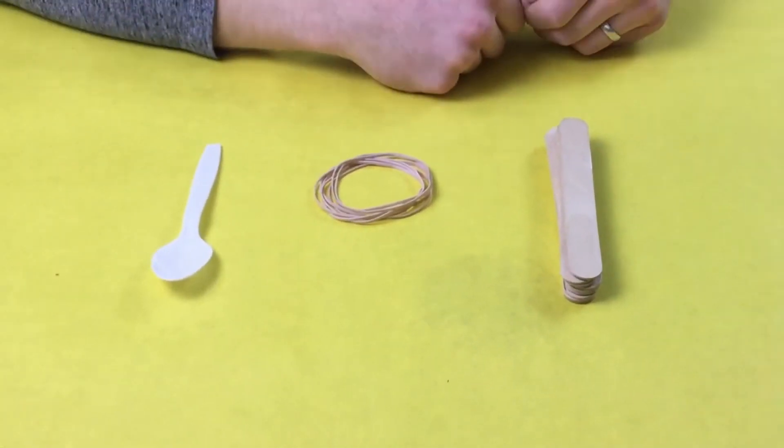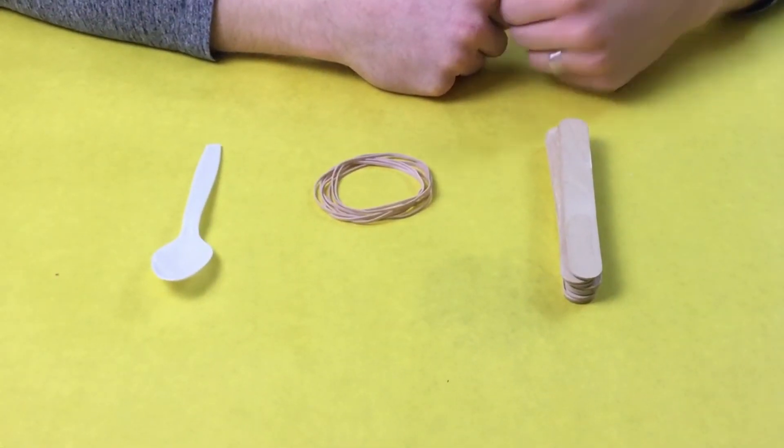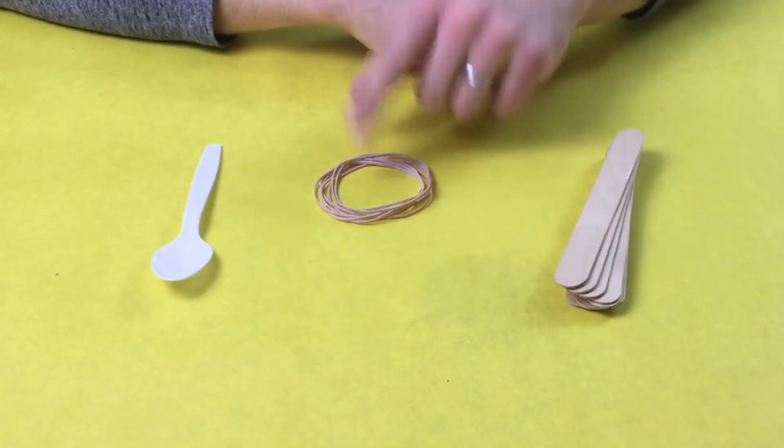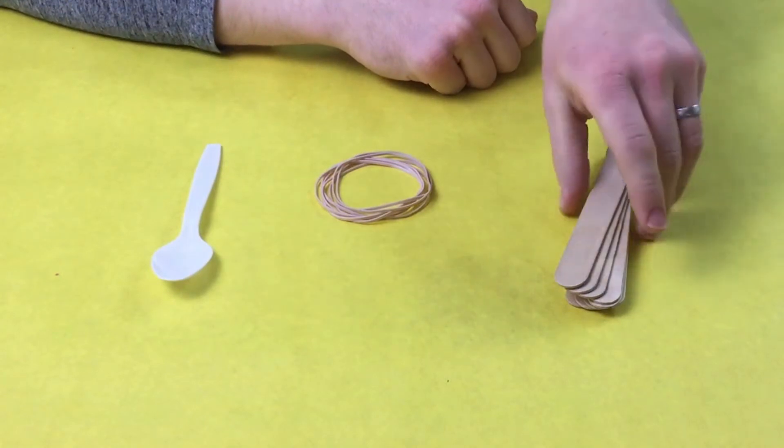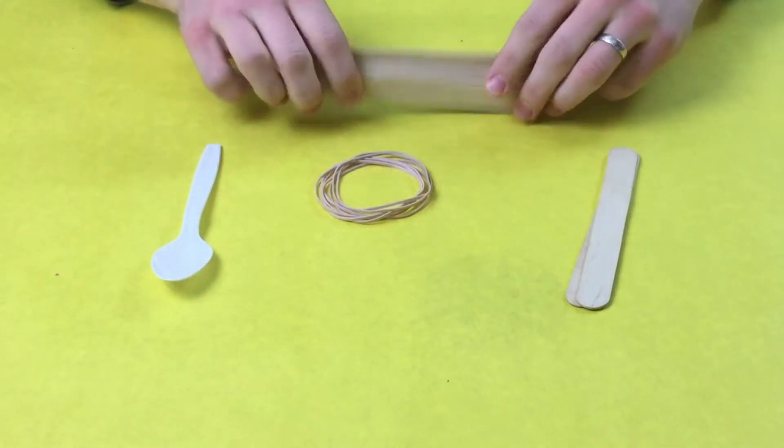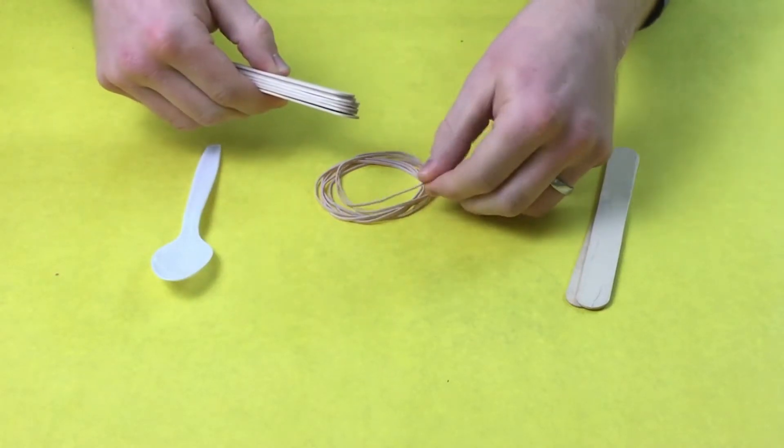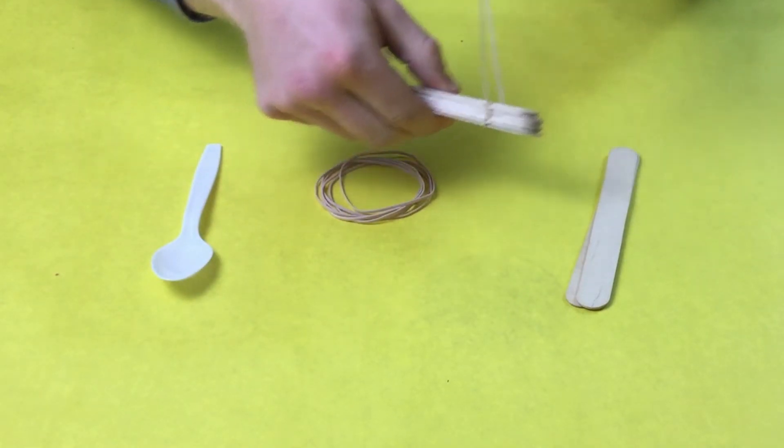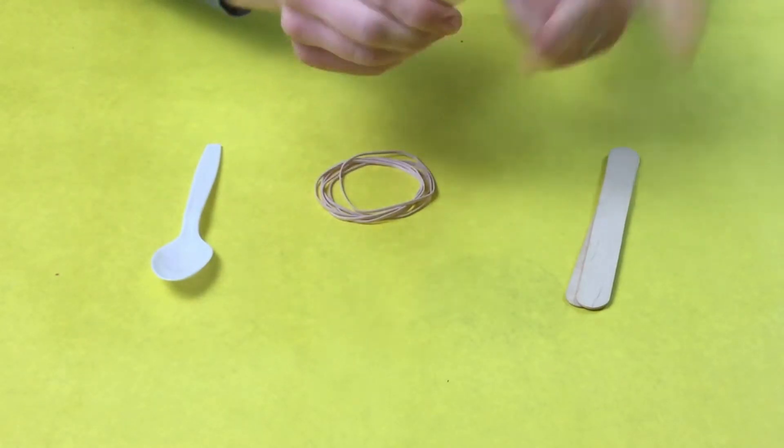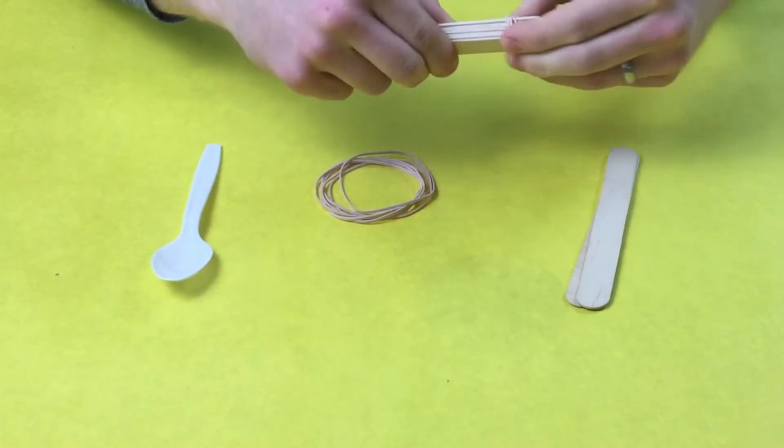So for my version here, I gathered up nine craft sticks and seven rubber bands. First step is we're going to take seven of those craft sticks and rubber band them together. I did two rubber bands, one on the left and one on the right. You just want to make sure that they're not going anywhere.